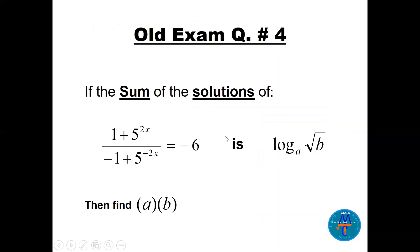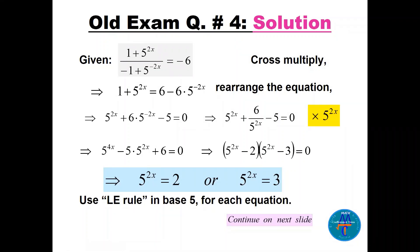Question four: if the sum of solutions of this equation equals log base a of square root of b, find a times b. We cross-multiply to get 1 plus 5^(2x) equals 6 minus 6 times 5^(−2x). Rearranging using the negative exponent rule and multiplying through by 5^(2x) gives 5^(4x) minus 5 times 5^(2x) plus 6 equals 0. Factoring yields (5^(2x) minus 2)(5^(2x) minus 3) equals 0, so 5^(2x) equals 2 or 5^(2x) equals 3.